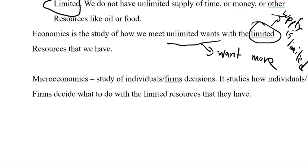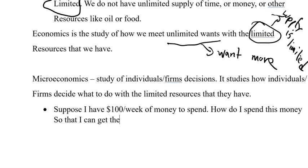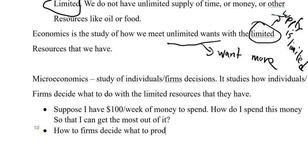One example of a microeconomic decision would be: supposing I have $100 a week to spend, how do I spend this money so that I can get the most out of it? Should I buy groceries? Should I buy some food and go out to have fun with my friends, go to the movies or go to a restaurant? That would be a microeconomic decision. Firms also decide similarly — how do firms decide what to produce and how to produce. These are microeconomic decisions.